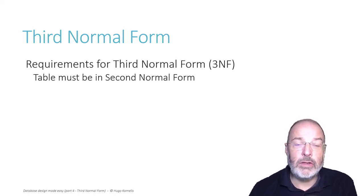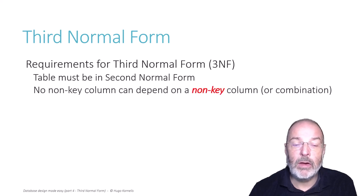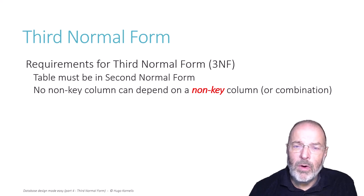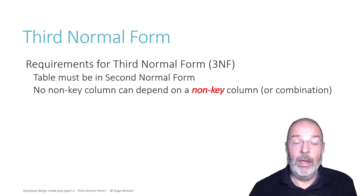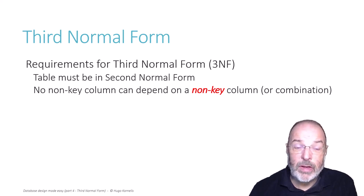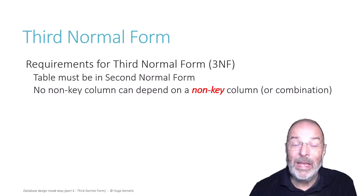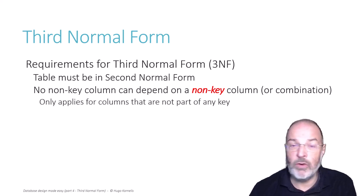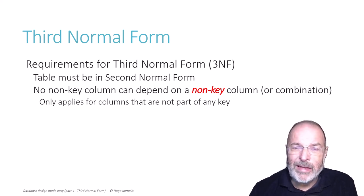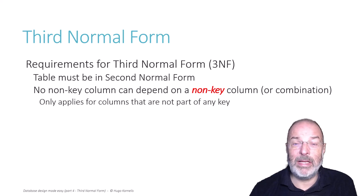Then the next check you have to do is that no non-key column can depend on any non-key column, or a combination of columns that is not a key. The left-hand side of that sentence is quite straightforward: no non-key column can depend. So for the dependent column you only have to check columns that are not included in any candidate key. However, the right-hand side is more complex than it might seem and we will work through that later.